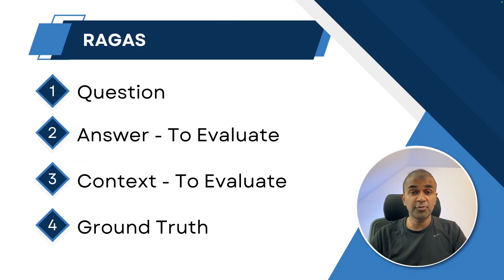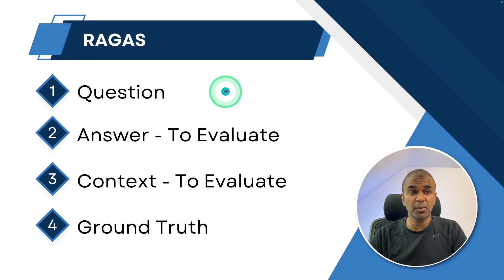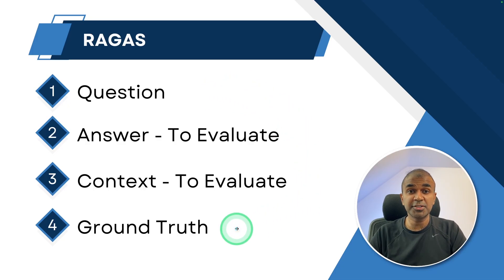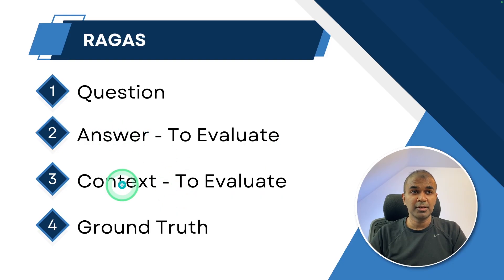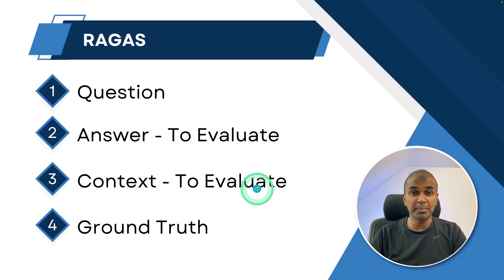In regards to RAGAs, there are four different things which we need to focus on. One is the question — the question which the user is going to ask. Next, the ground truth — the real answer. These question and ground truth will be provided as input. The answer and the context will be generated by the models — the answer by the large language model, and the context during retrieval using the embeddings model.